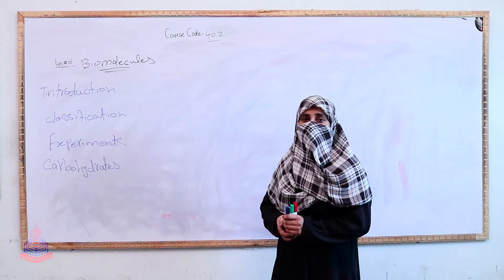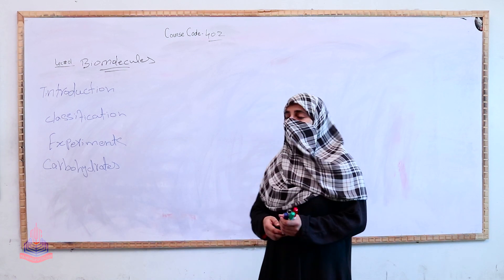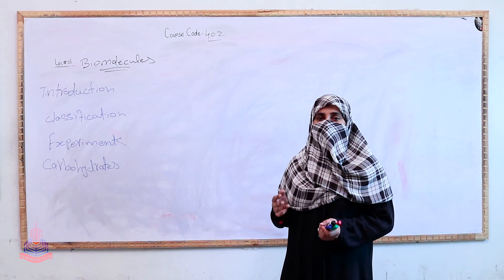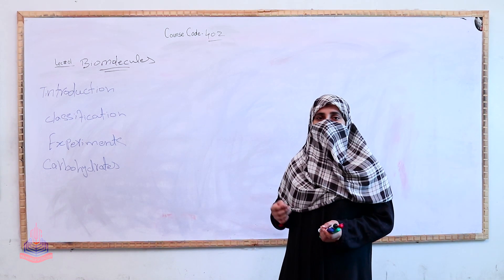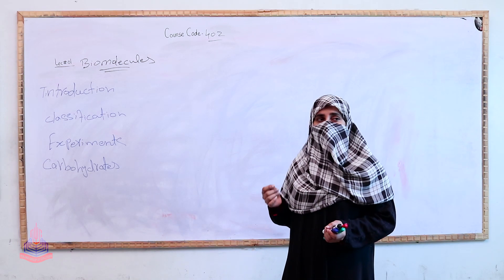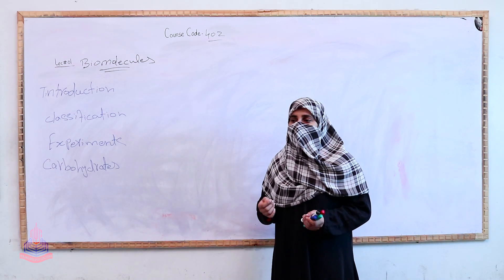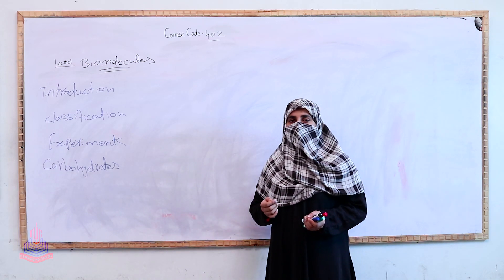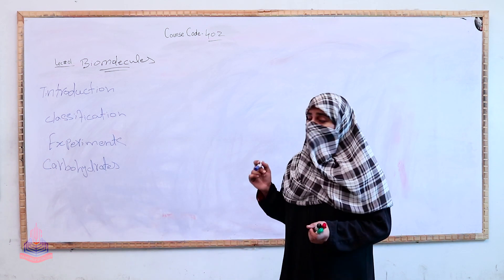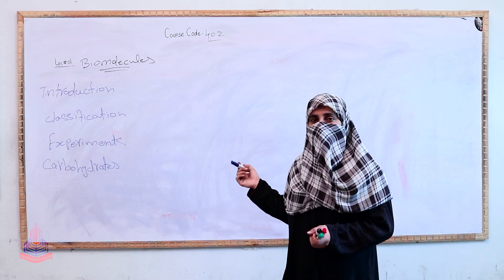My name is Sonia Riaz and my qualification is M.Phil Botany. We have studied Cell Biology with Genetics and Evolution. The course code is 402. Our first lecture is on Biomolecules.